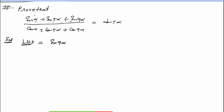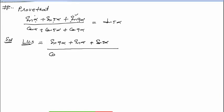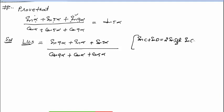तो मैं लगा रहा हूँ — sine 9 alpha, पहले इसको रख रहा हूँ, फिर sine alpha, sine 5 alpha एक side में। नीचे cos 9 alpha, plus cos alpha, and cos 5 alpha। आपको पता है sine C plus sine D का formula 2 sine (C+D)/2 times cos (C-D)/2 होता है, और cos C plus cos D का formula 2 cos (C+D)/2 times cos (C-D)/2 होता है।